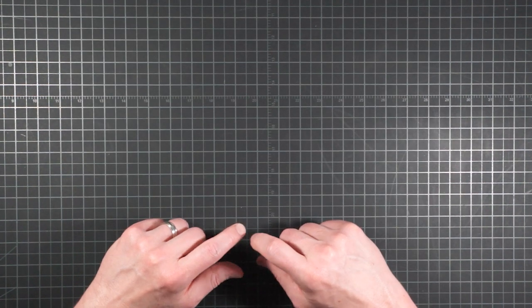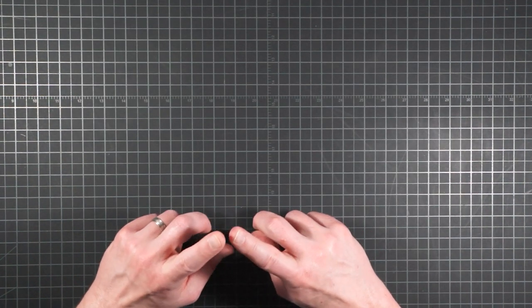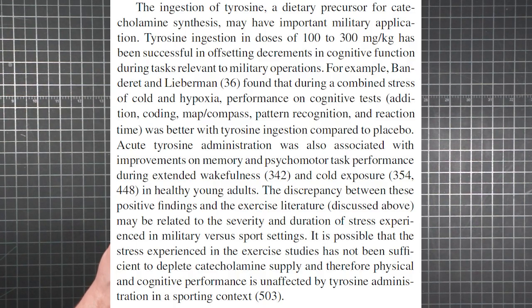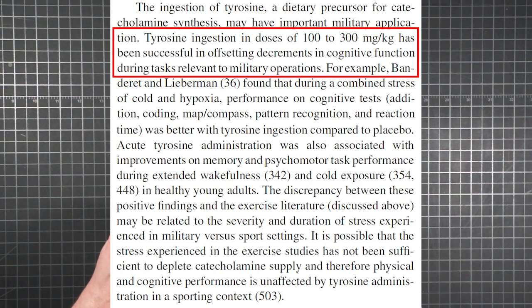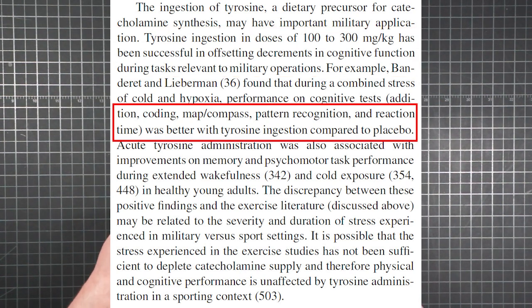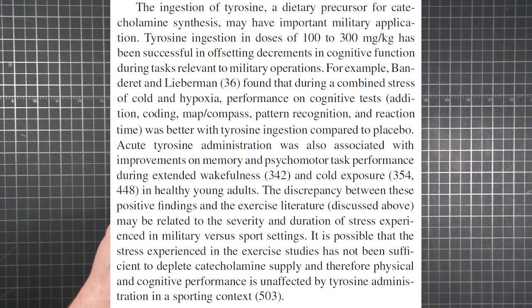And then lastly, OptiComp mentions another amino acid, tyrosine. Doses from 100 to 300 milligrams per kilogram of body weight have been successful in offsetting decrements in cognitive function during tasks related to military operations. Well, those tasks include coding, map and compass, pattern recognition, and reaction time, some of which could be relevant to backcountry travel as well. Though it seems the benefits may only appear after high levels of combined stress like cold and hypoxia.